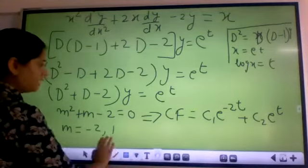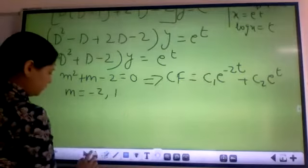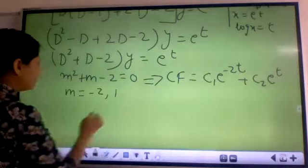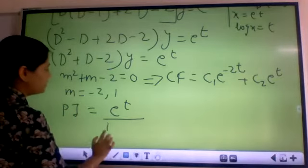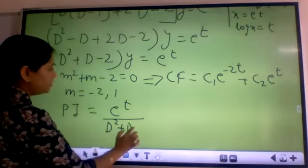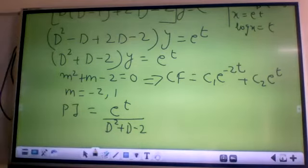Next step I need PI, particular integral. So now if I want to find out PI, PI is e^t upon (d² plus d minus 2). Right?